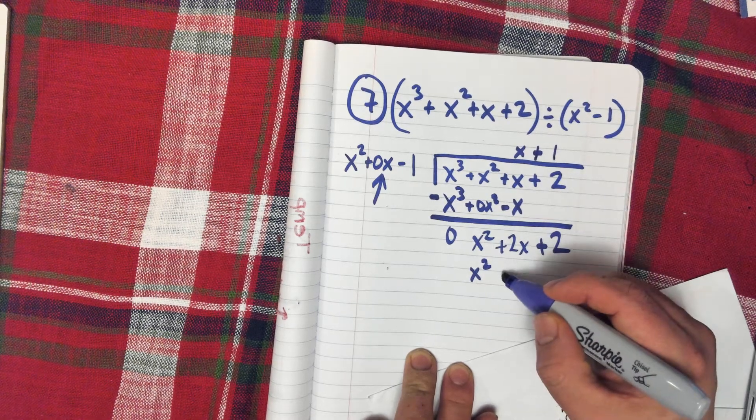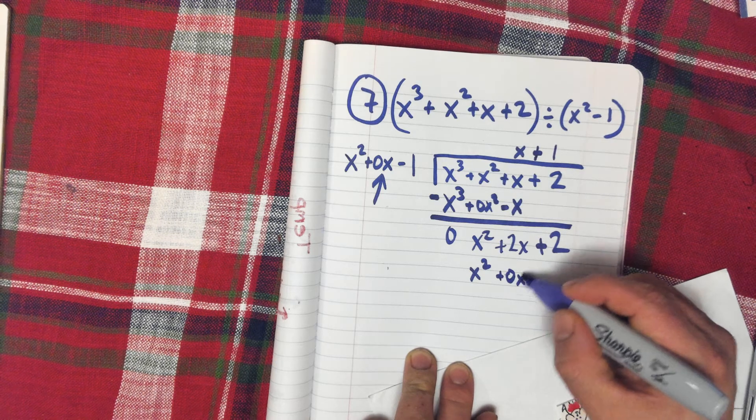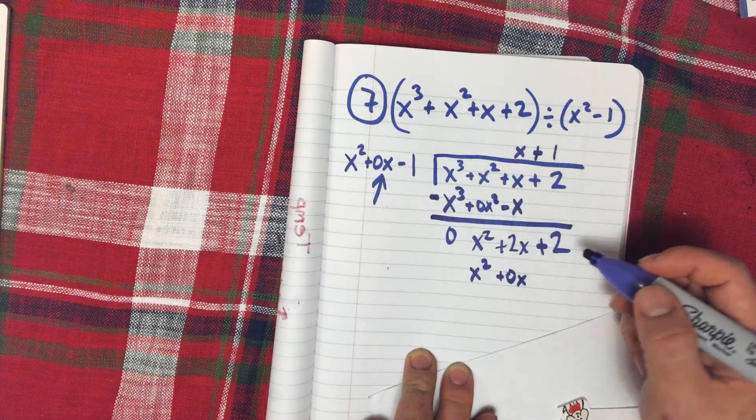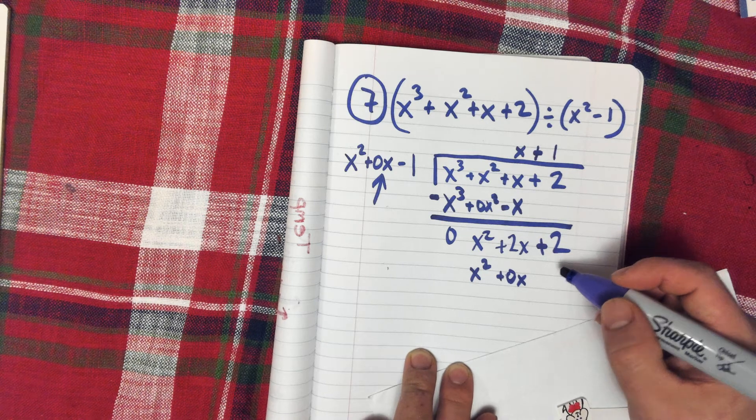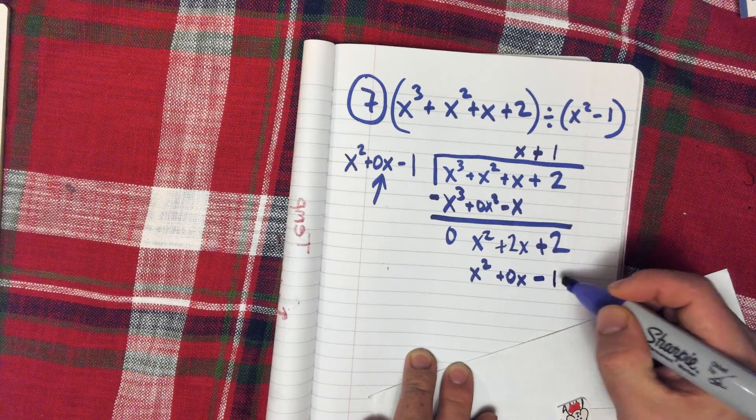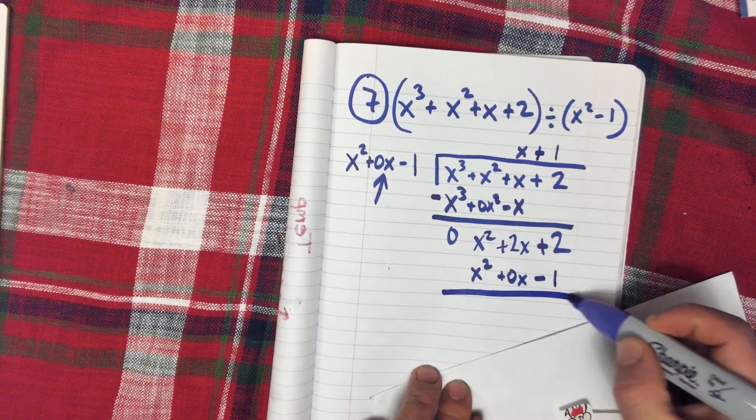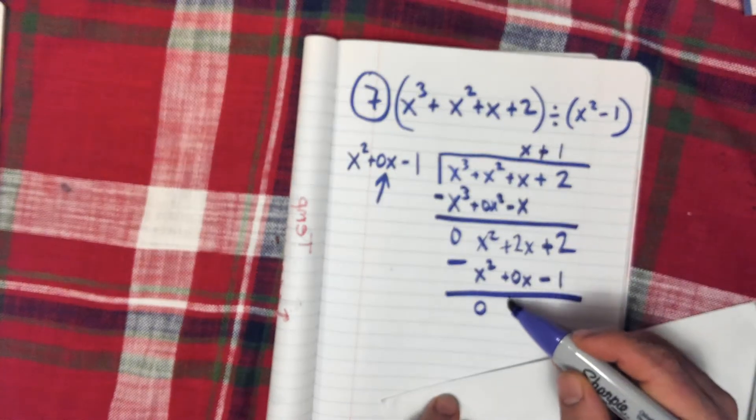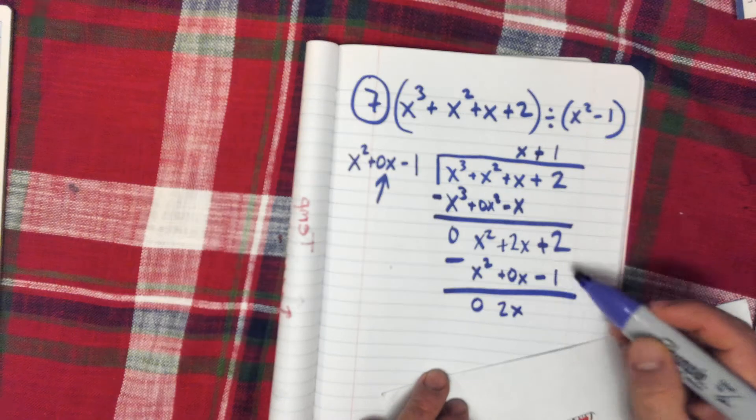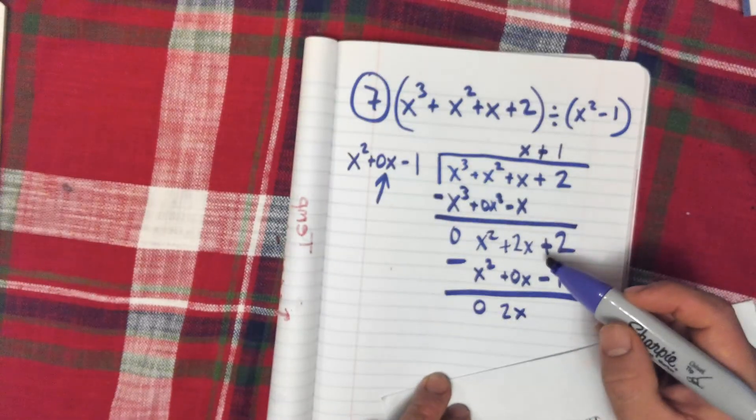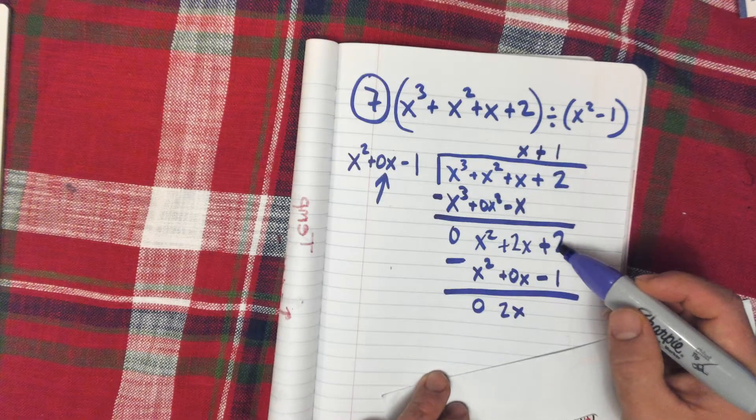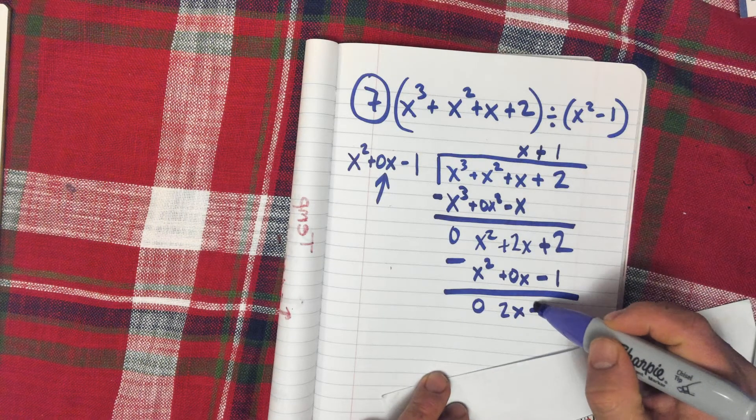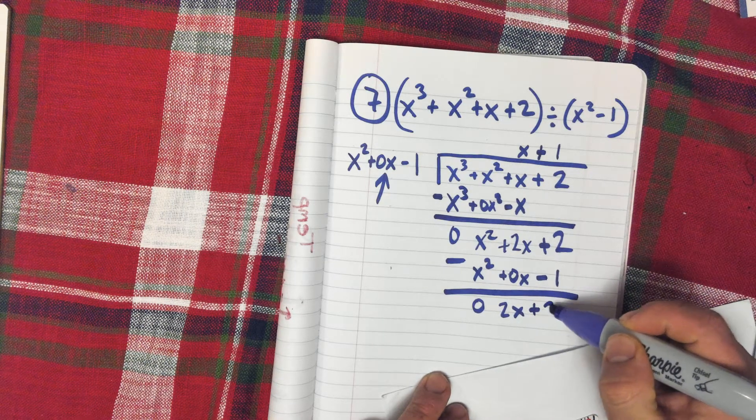All right, once again, let's subtract. Those cancel out. This is going to remain 2x, and this is 2 minus negative 1, or 2x plus 3.